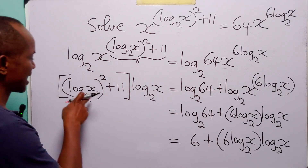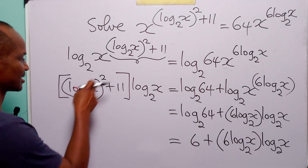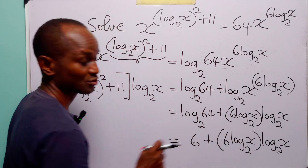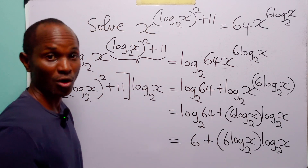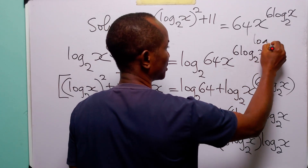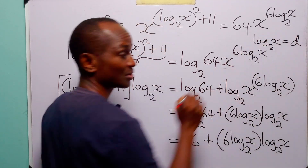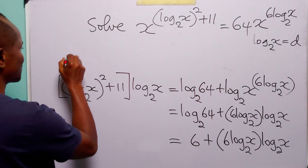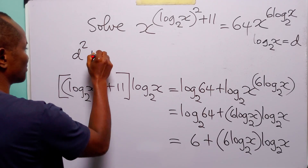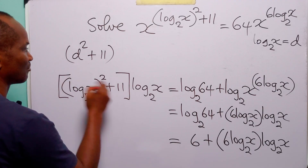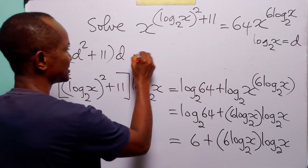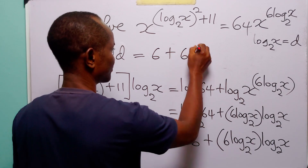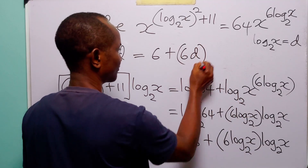When you look at the right-hand side and the left-hand side, you will see that we have log to base 2 of x appearing in multiple places. So let log to base 2 of x be equal to d. With this substitution, we can write this equation as d squared plus 11, multiplied by d, is equal to 6 plus 6 times d, multiplied by d.